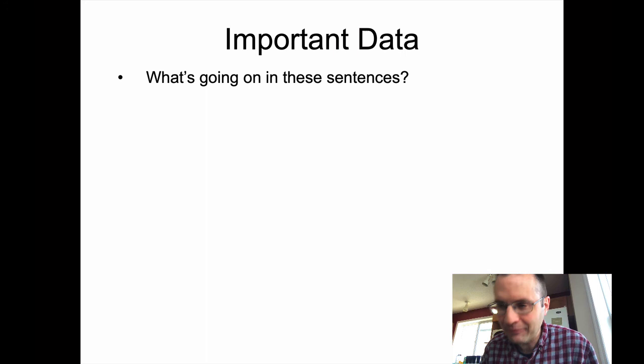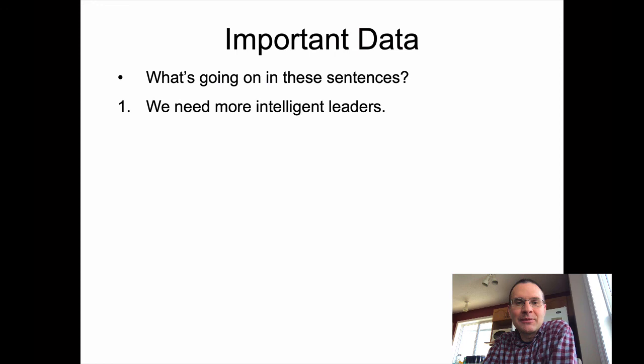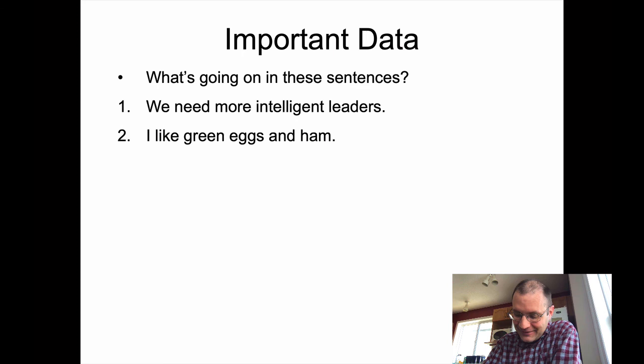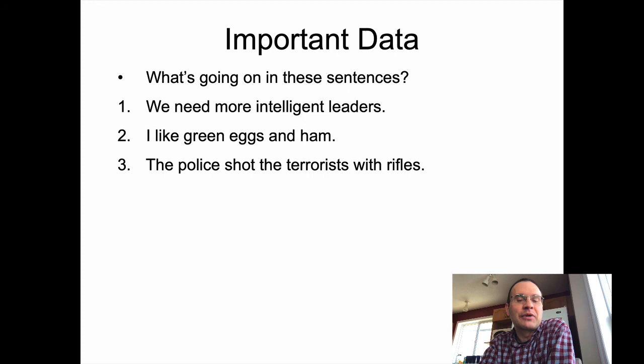Normally in class I would stop after each of these sentences and ask you what's going on. I'll lay them out and you can pause the video to think about them. Number one: 'We need more intelligent leaders' — what does that mean? Number two: 'I like green eggs and ham' — the classic Dr. Seuss rather than Lewis Carroll. That sentence always drove me up the wall as a kid, partly because it has some ambiguity in it. Number three: 'The police shot the terrorists with rifles' — what does that mean? Come up with the answers in your head and then we'll come back to it in the next video.